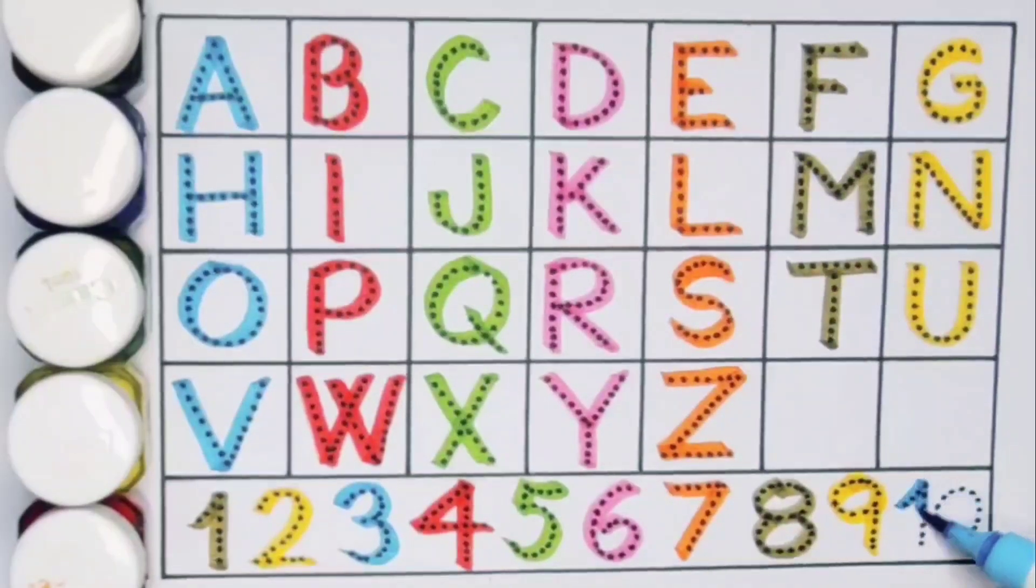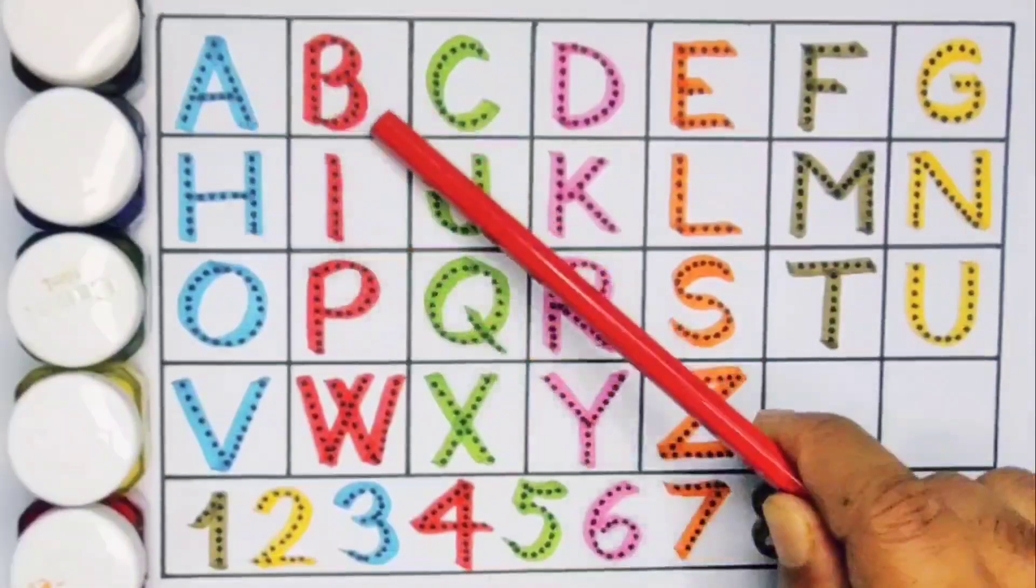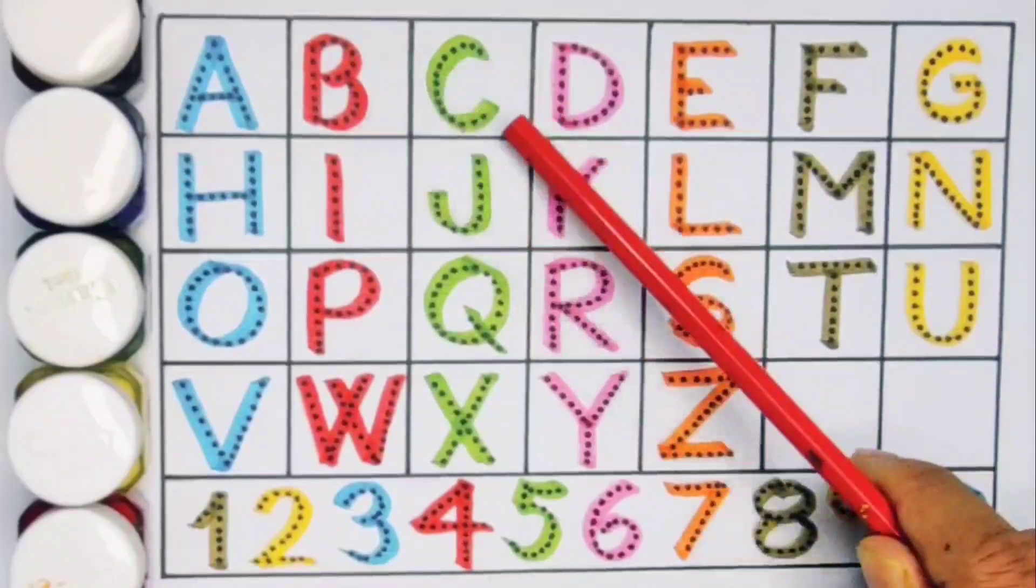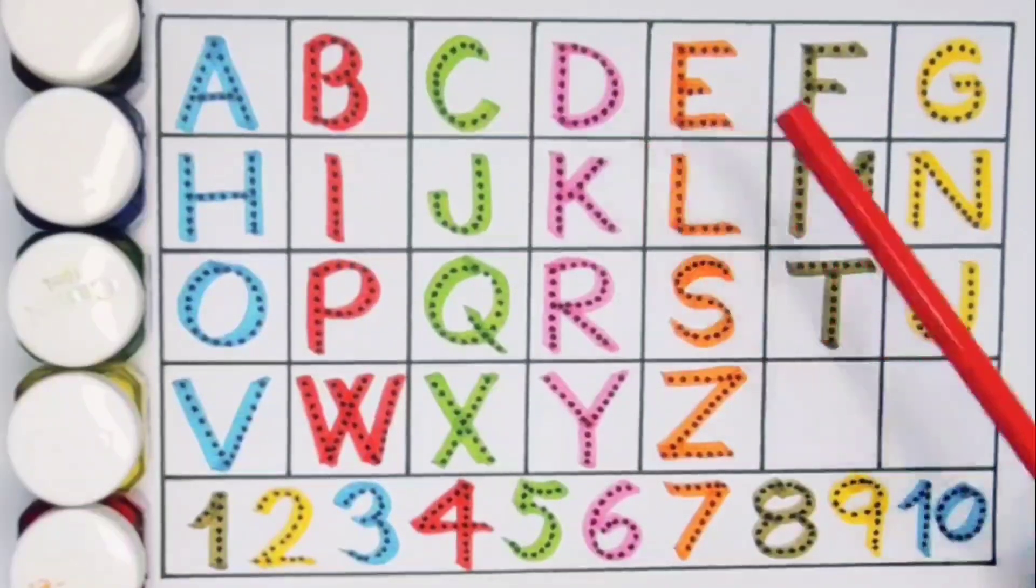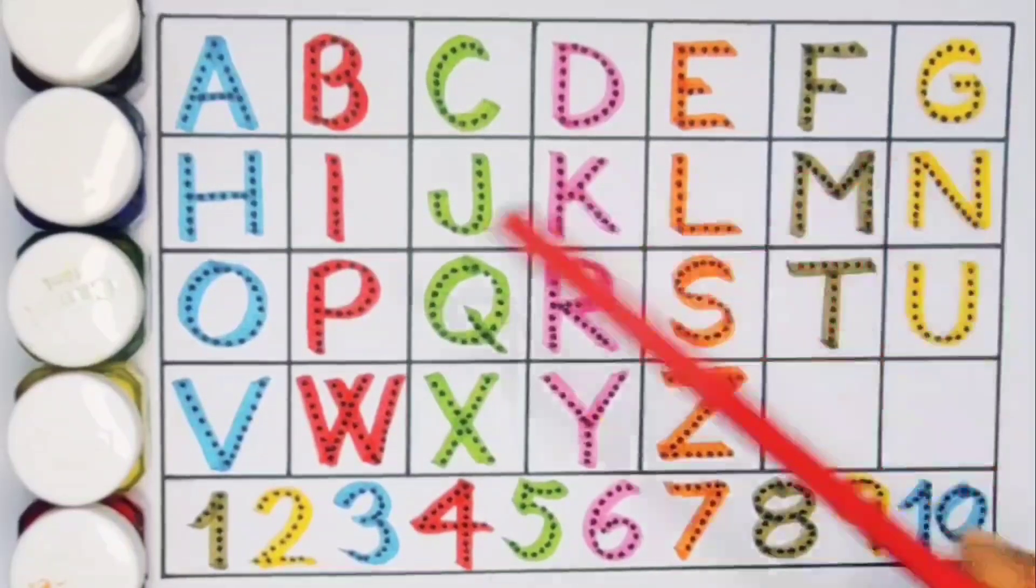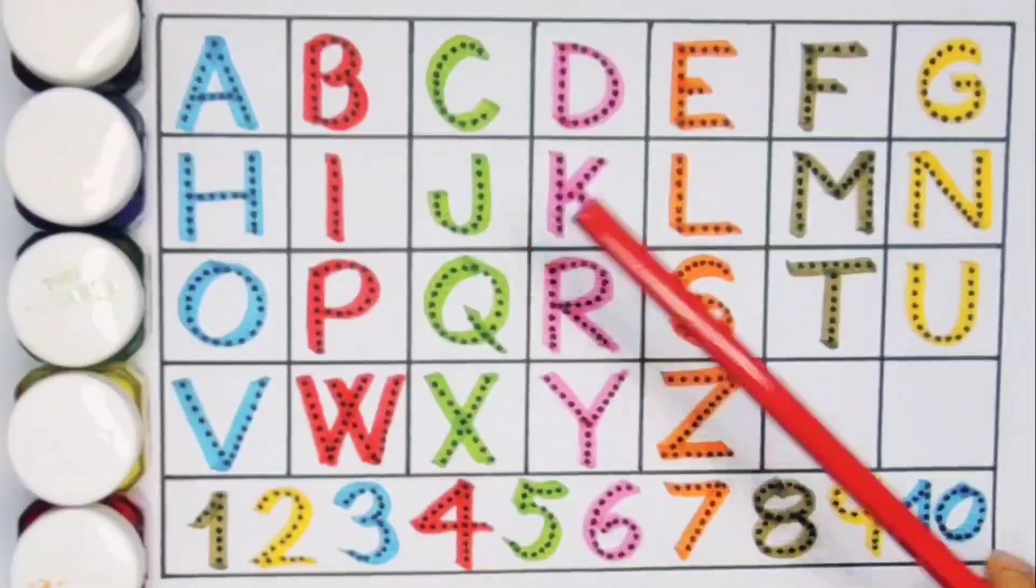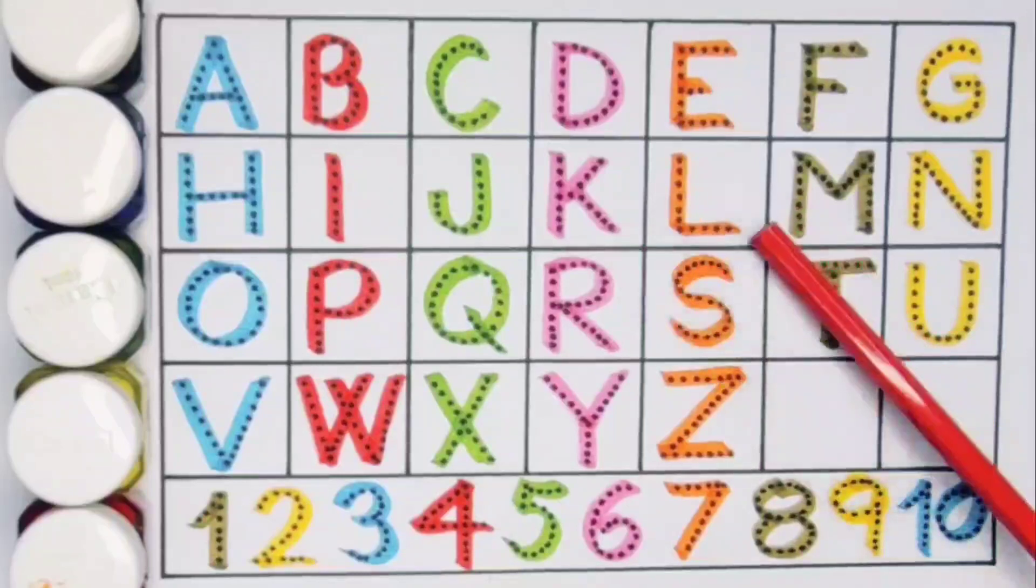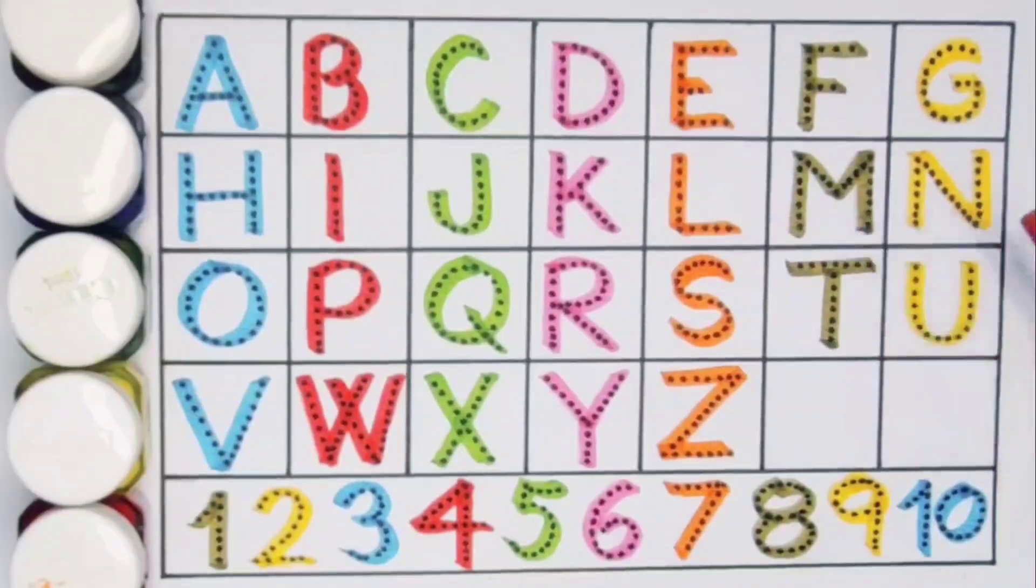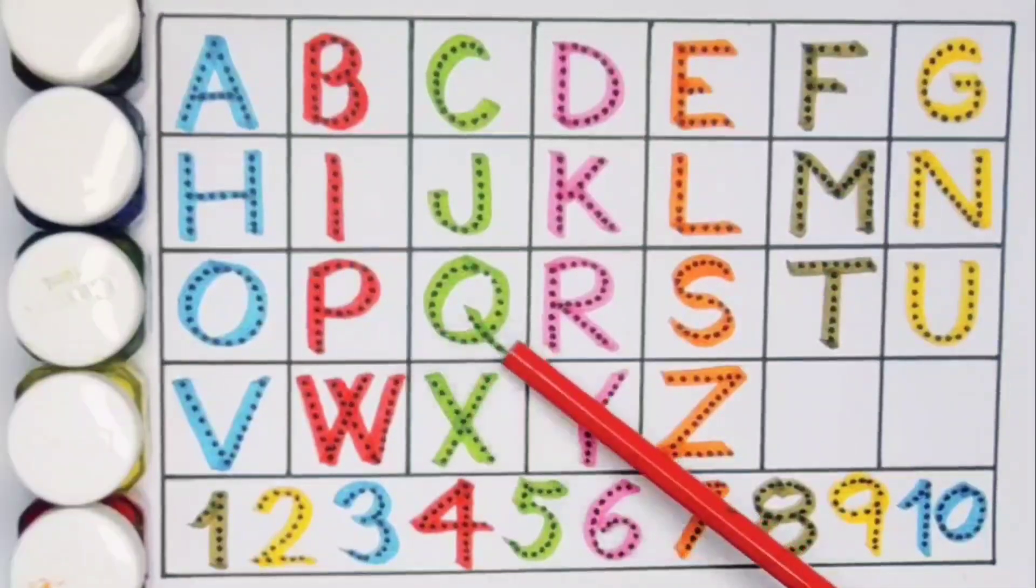Next ten, one zero ten number ten. What we learned: we learned A for Airplane, B for Bed, C for Cow, D for Duck, E for Egg, F for Flower, G for Giraffe, H for Hand, I for Iron, J for Jug, K for Key, L for Lock, M for Milk, N for Net, O for Onion, P for Paper.